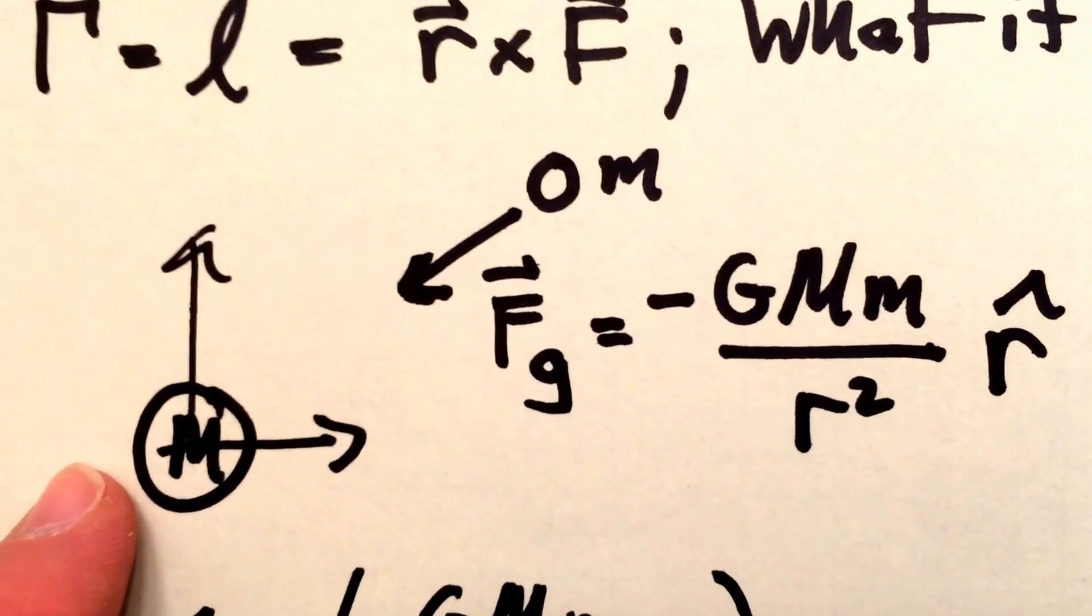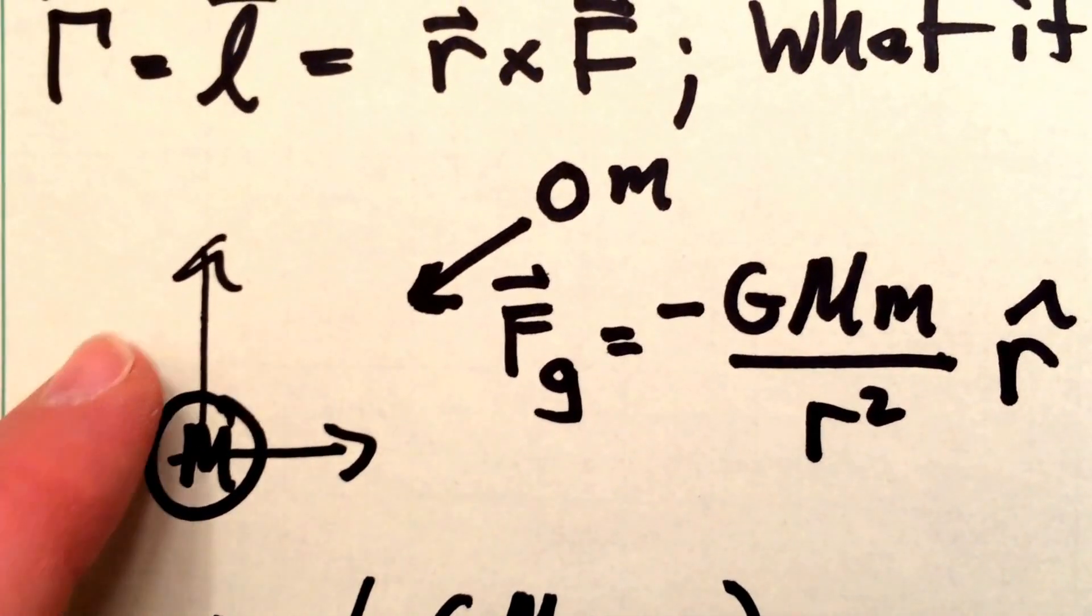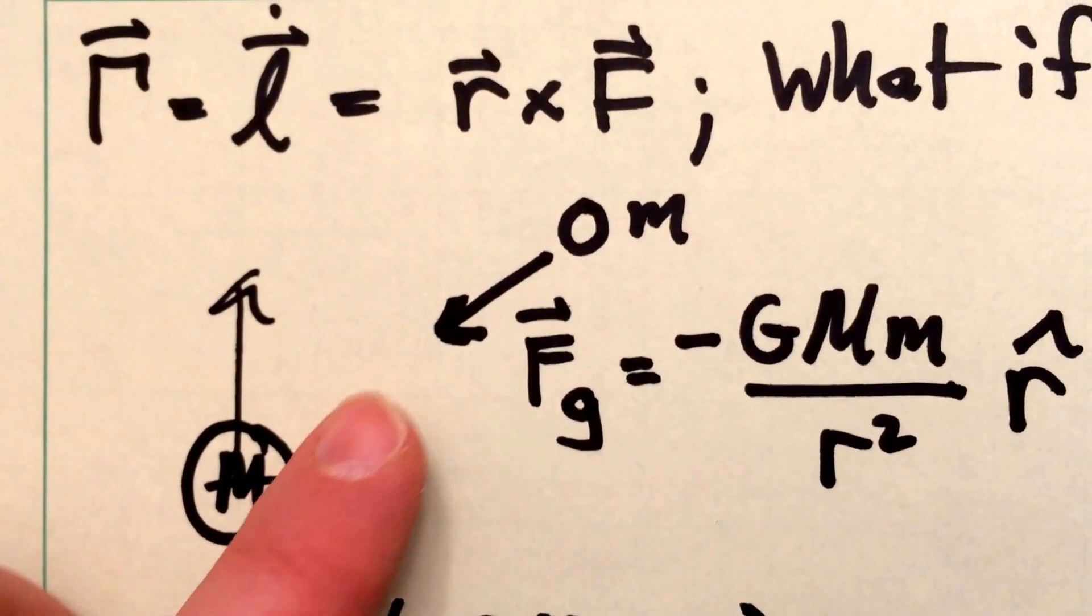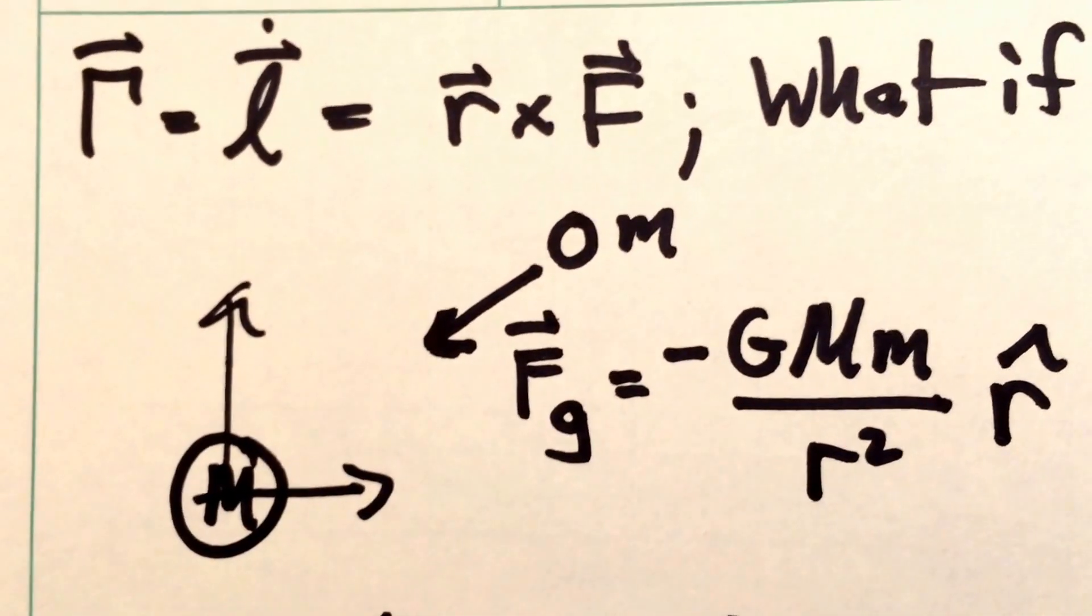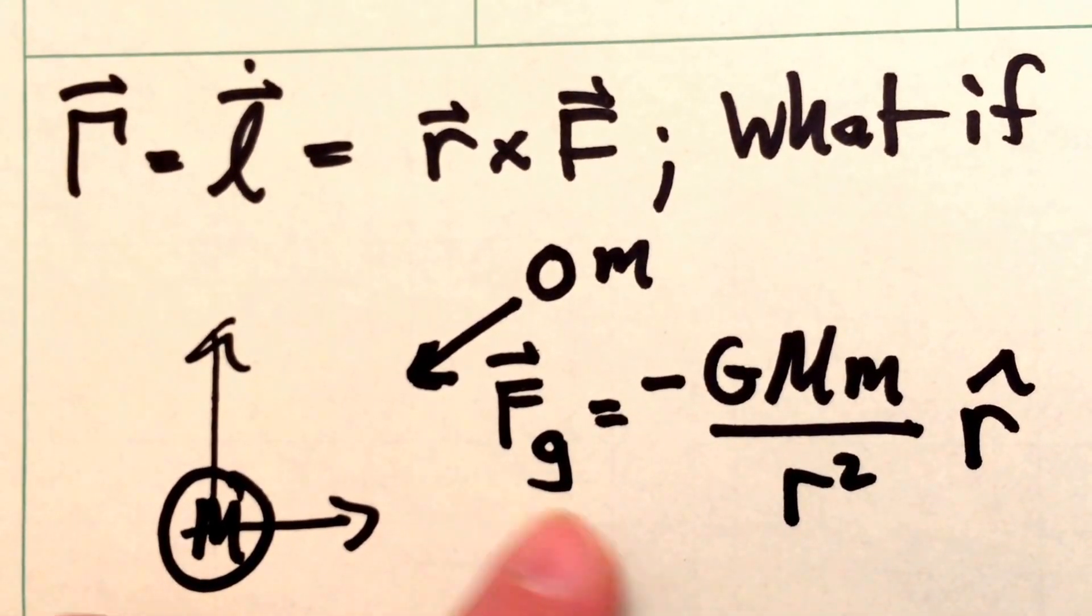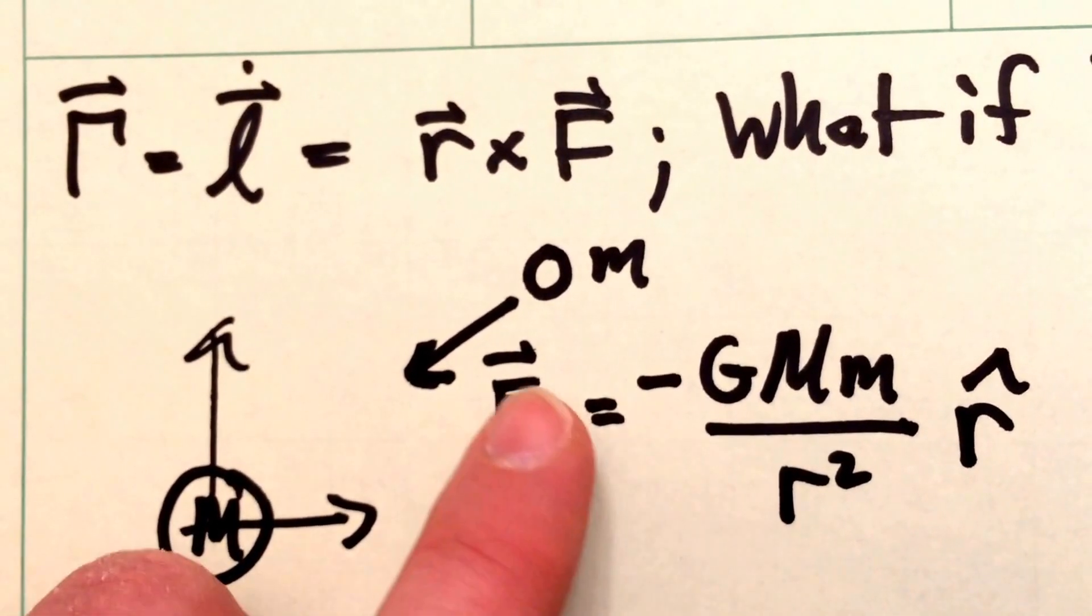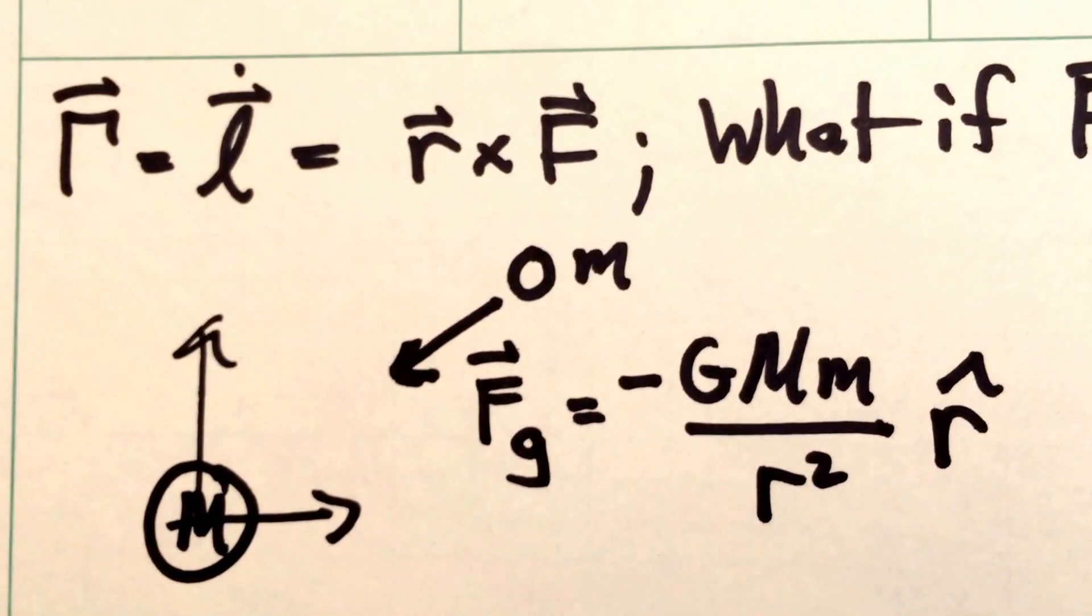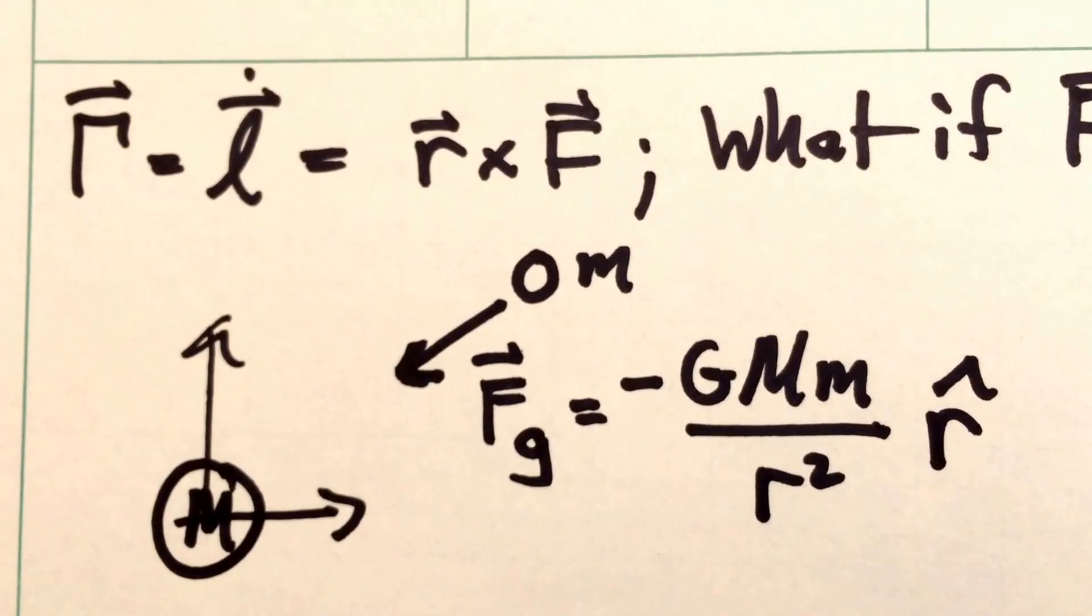So here let's imagine we have a very big mass, M, and we've set our coordinate system so that its origin lies at the center of big M. It's pulling gravitationally on another mass, little m, and that gravitational force is shown here. You can see in this case it points along the negative r hat direction, so it points from little m to capital M. That's the force of gravity on little m from big M.